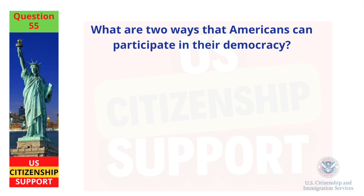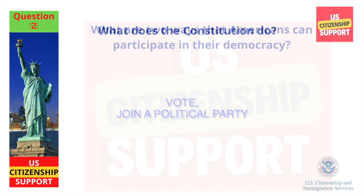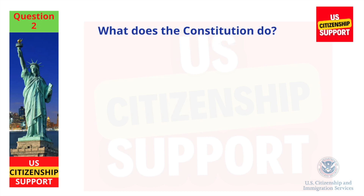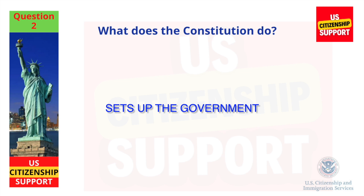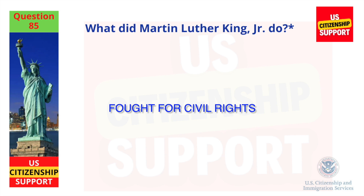What are two ways that Americans can participate in their democracy? Vote. Join a political party. What does the Constitution do? Sets up the government. What did Martin Luther King Jr. do? Fought for civil rights.